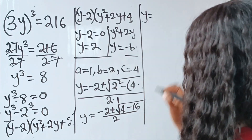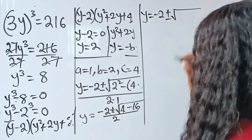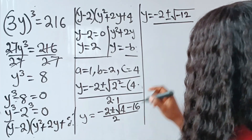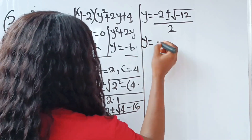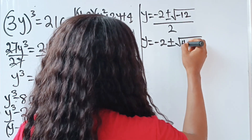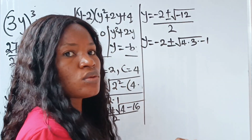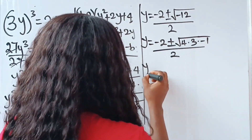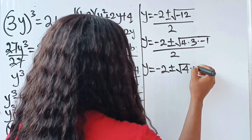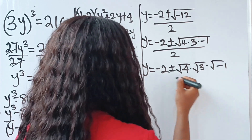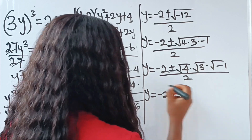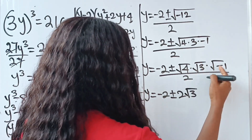We have y equals minus 2 plus or minus the square root of 4 minus 16, which gives us minus 12, divided by 2. Now the square root of minus 12 becomes the square root of 4 times 3 times minus 1, which separates into square root of 4 times square root of 3 times square root of minus 1. Since square root of 4 is 2 and square root of minus 1 is i, we get 2√3·i.